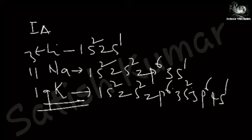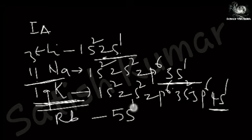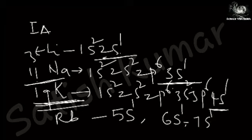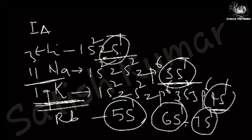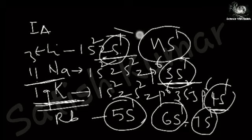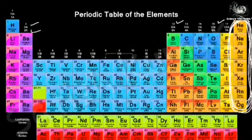If you observe carefully, the last electron of lithium enters into 2s¹, the last electron of sodium enters into 3s¹, and the last electron of potassium enters into 4s¹. For rubidium it is 5s¹, for cesium (atomic number 55) it is 6s¹, and for francium it is 7s¹. In general, the last electron of these elements enters into ns¹. So these elements, whose last electron configuration is ns¹, are grouped together and placed in group 1A.